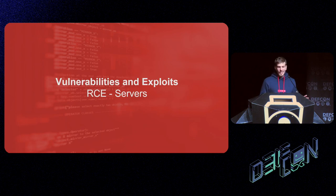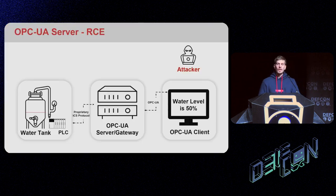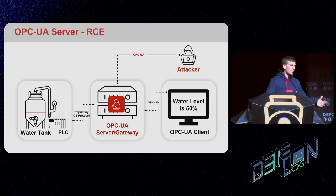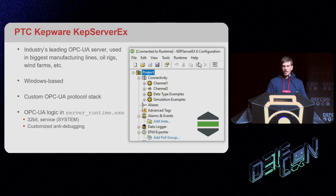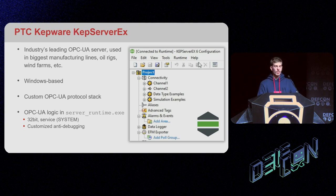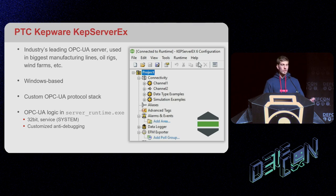Denial of service is okay, but crashing servers in SCADA networks isn't a big enough deal. We wanted remote code execution — to control the OPC UA server, modify tags, change the water level from 0 to 100, and alter the physical process. So we decided to research PTC Kepware, a very popular Windows-based 32-bit OPC UA server implemented as a service, one of the industry-leading OPC UA servers used in the biggest manufacturing lines including oil rigs and wind farms.